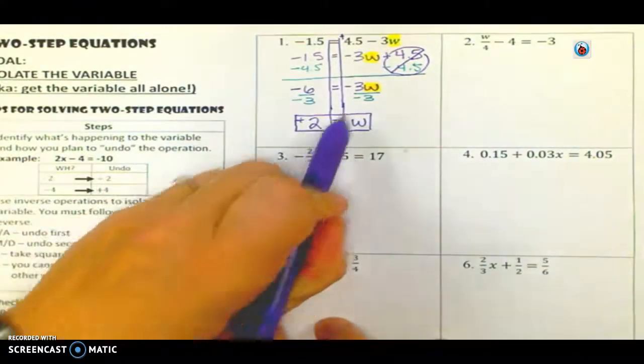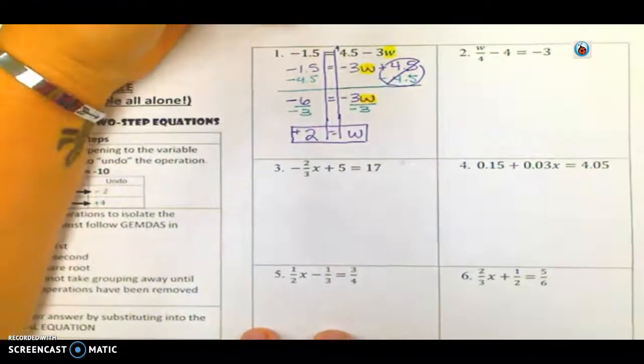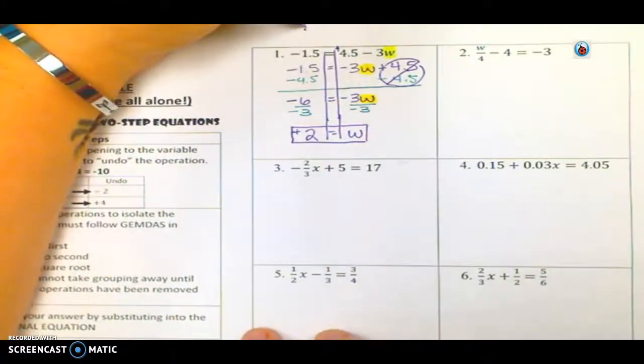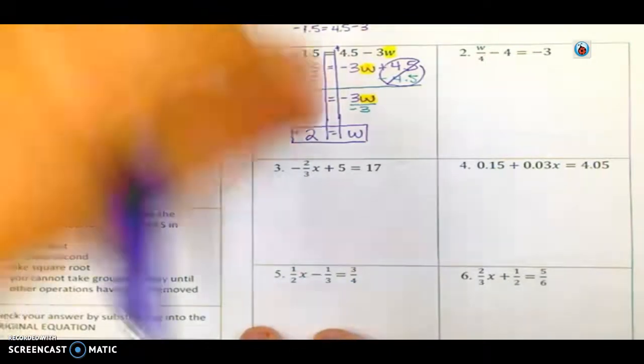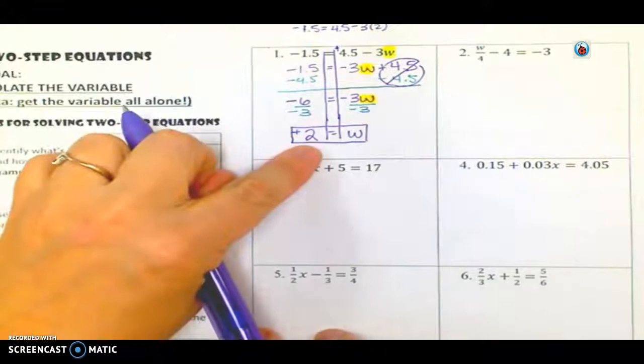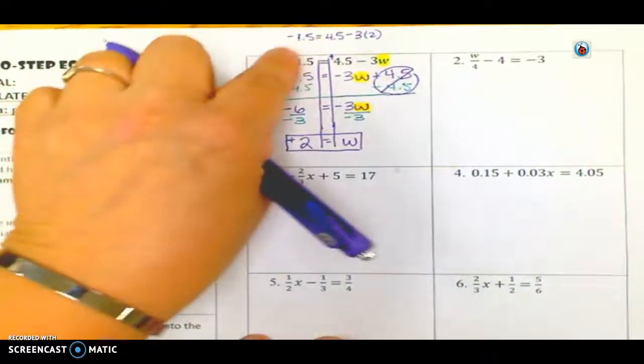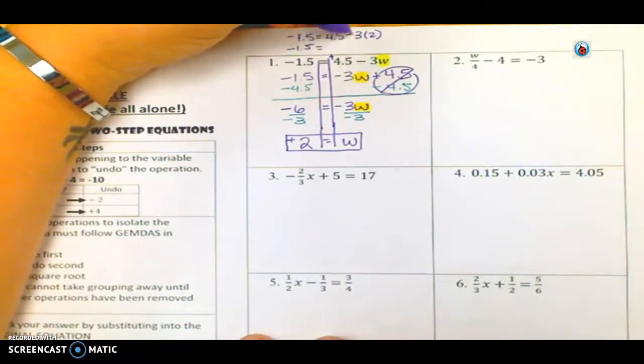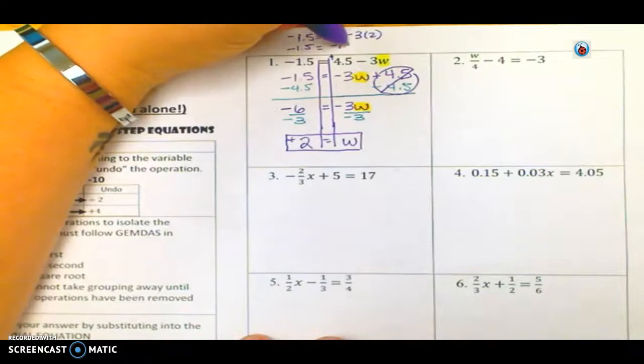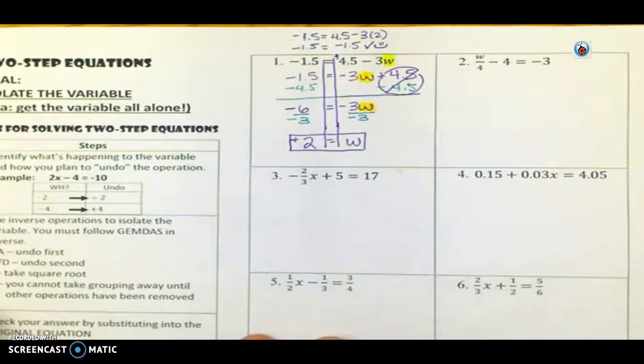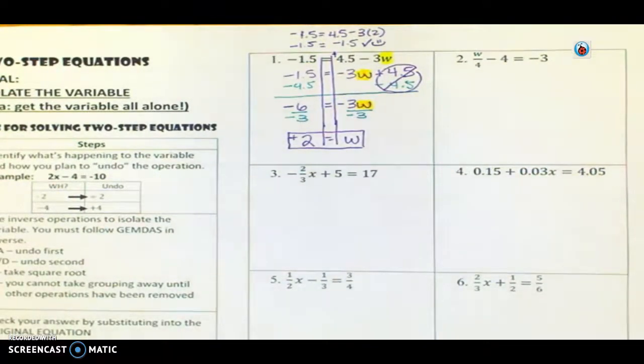You don't have to write the positive sign. The only reason I'm doing it is so it's like a visual reminder that I made sure to take care of my signs. So there is my final answer. W is equal to positive 2. And if I wanted to, I could take that and plug that back in. So negative 1.5 equals 4.5 minus 3 times 2. Now, if my answer is correct, when I go to solve this, I will have matching, both sides will match. So I get negative 1.5. 4.5 minus 6 is negative 1.5. Because they match, I know that I got my answer correct. So that is a great strategy for checking your work.